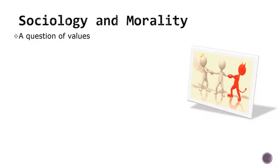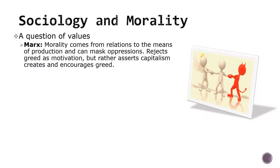Sociologists have traditionally discussed morality — what is right and wrong — as a matter of values. Marx saw morality as coming from each class's relation to the means of production, thus creating a system of values that favors the ownership class over the working class. While he does not suggest that greed is a value that motivates the market, he does show that capitalism creates and encourages greed in both classes. He does not consider this a favorable or sustainable outcome.